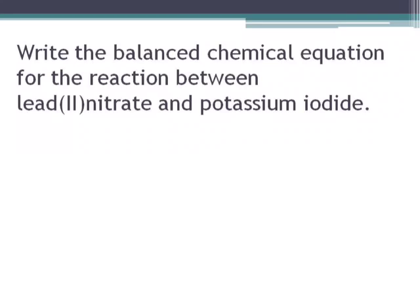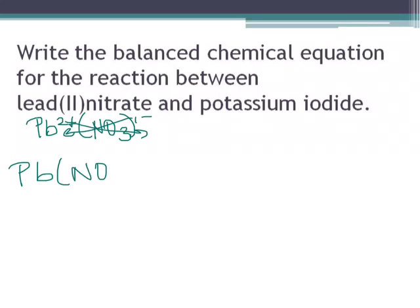Let's write the balanced chemical equation for the reaction between lead 2 nitrate and potassium iodide. Lead 2 nitrate: Pb 2 plus, nitrate is NO3, 1 minus. When you do that crisscross you get Pb(NO3)2.